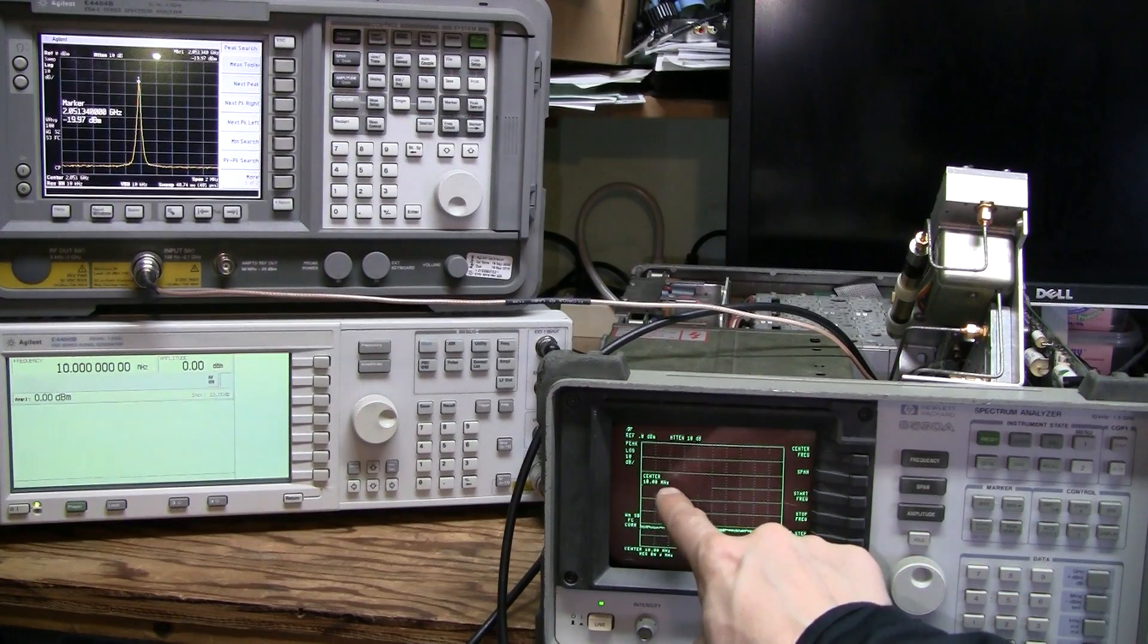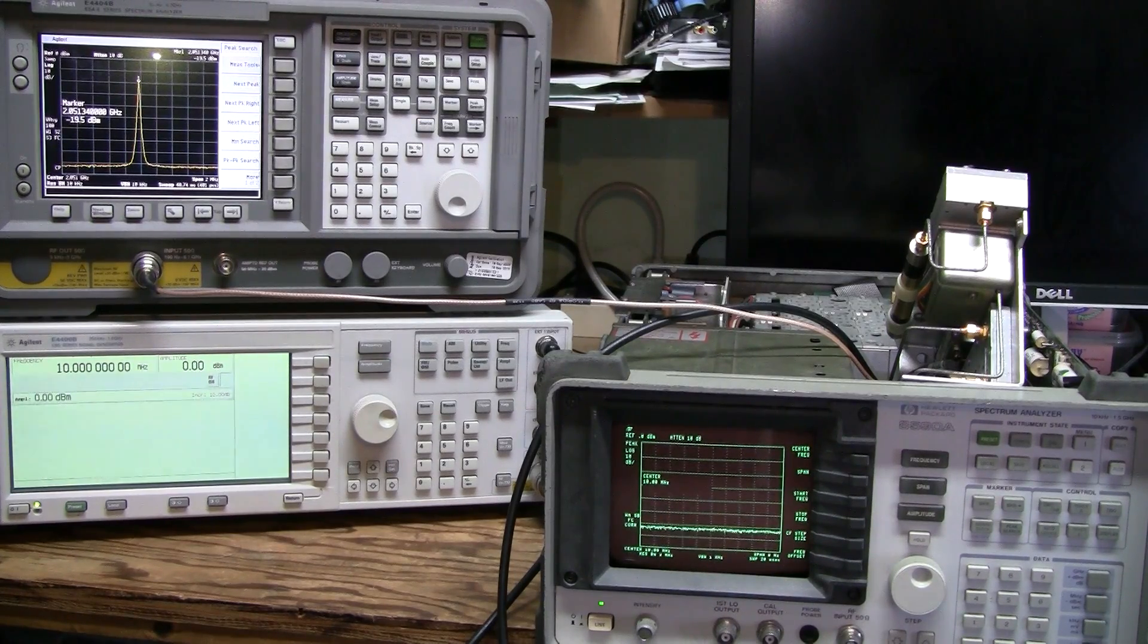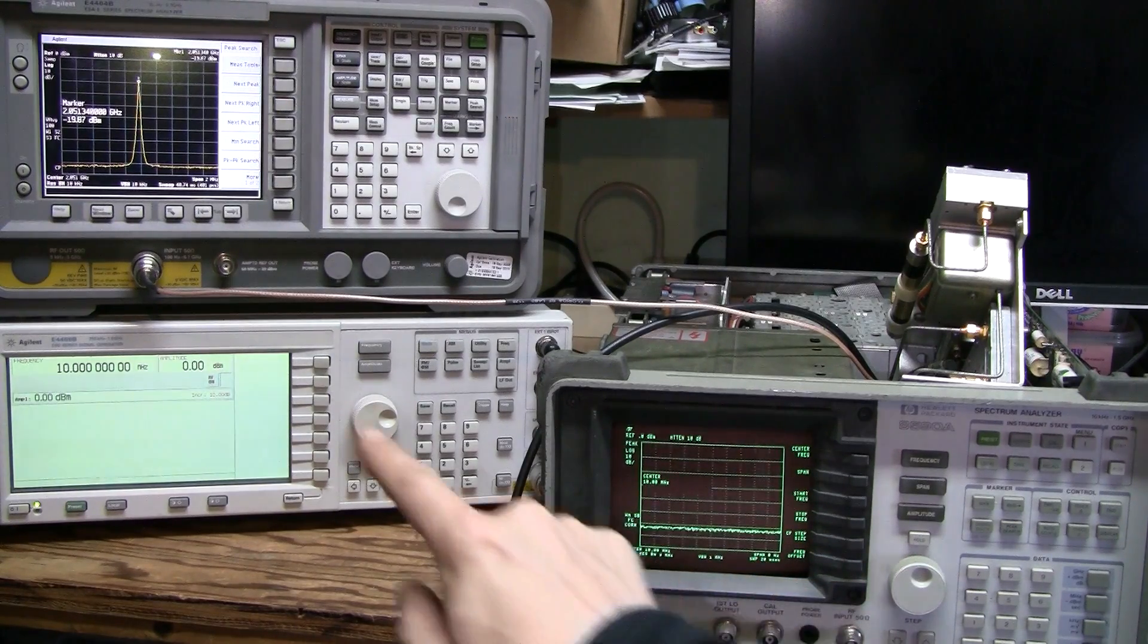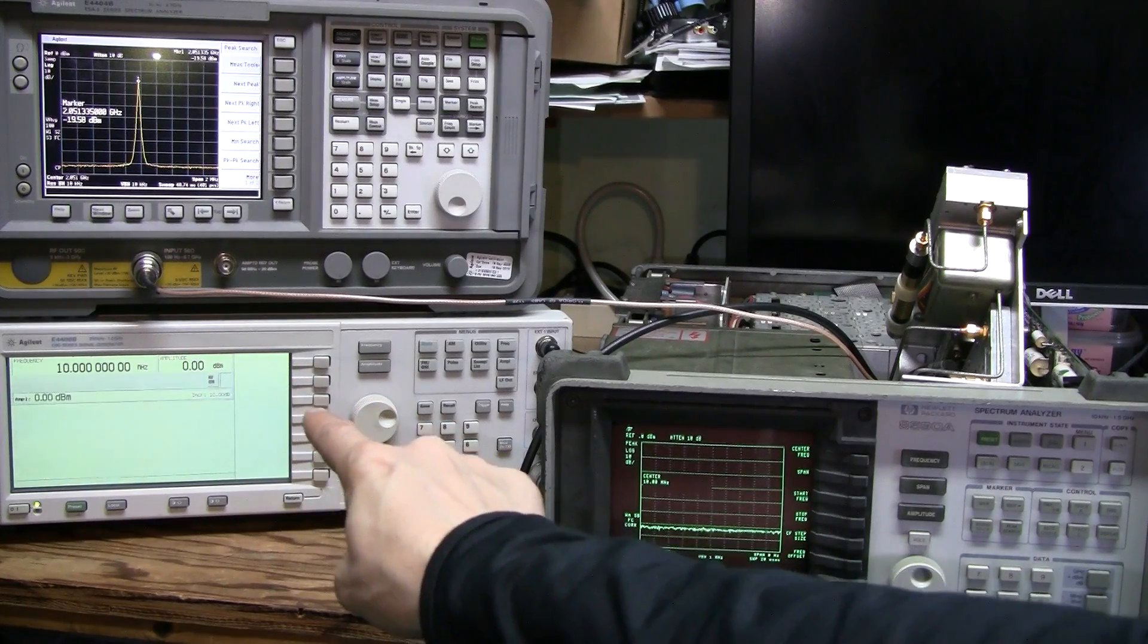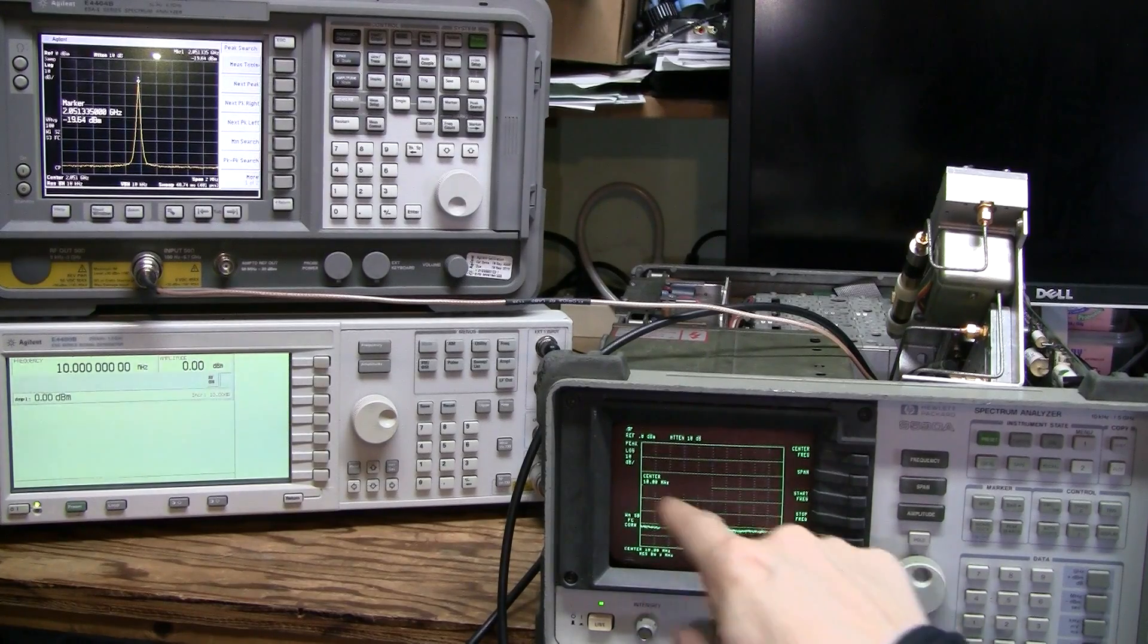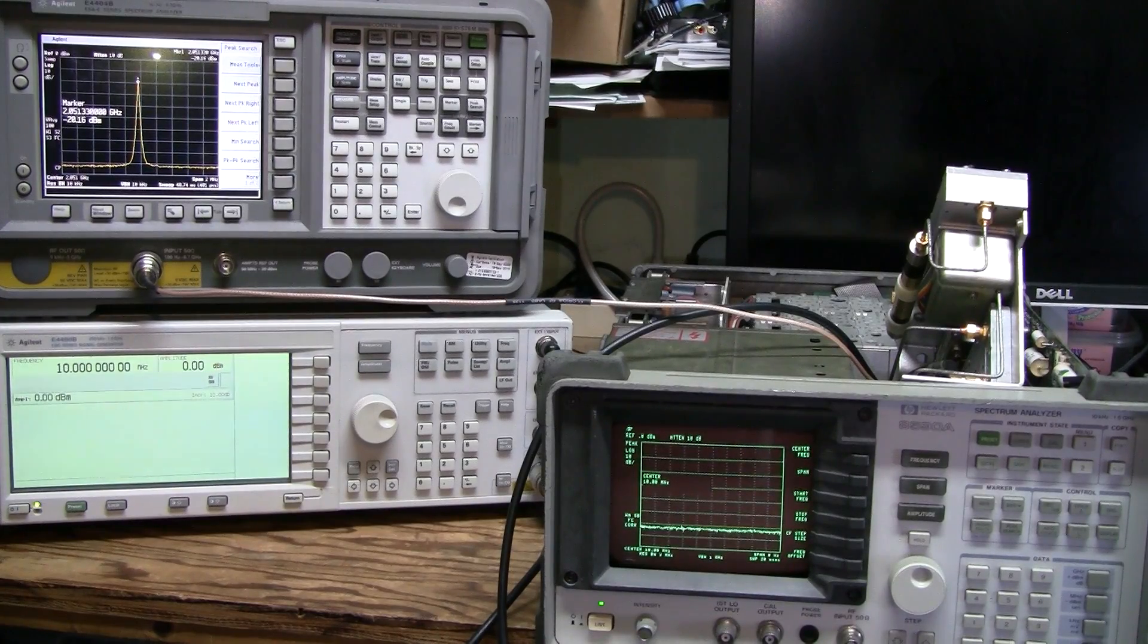Currently I set it to 10 MHz which means the LO will be tuned to the frequency of 2.05 GHz plus 10 MHz. And then by putting into the converter 10 MHz signal I subtract 10 MHz from this so we end up at that 2.05 GHz intermediate frequency.